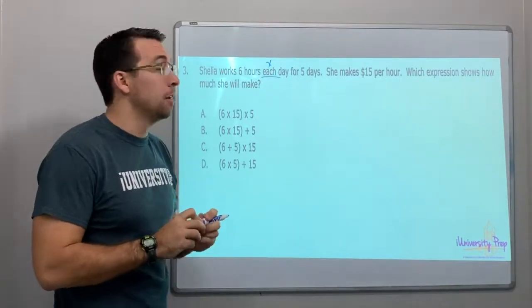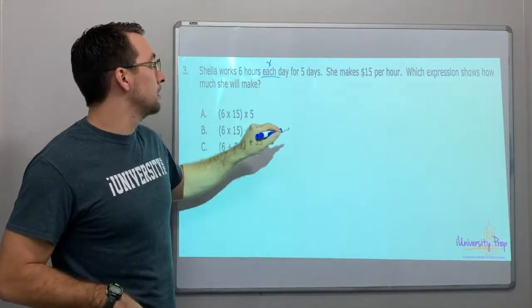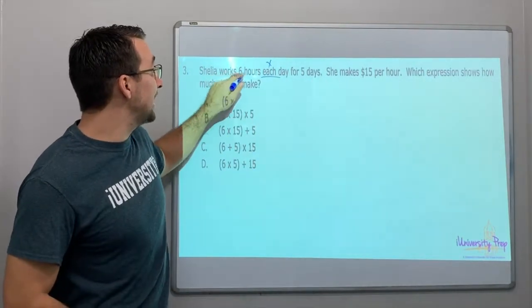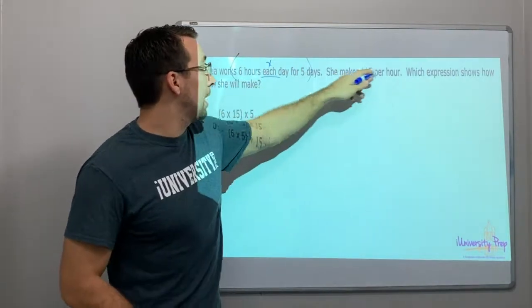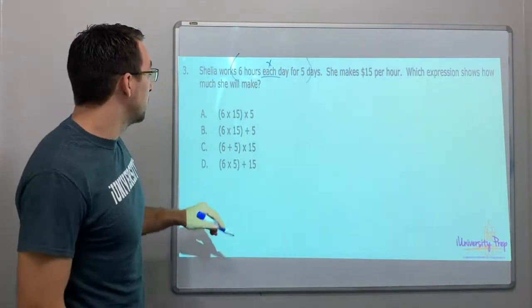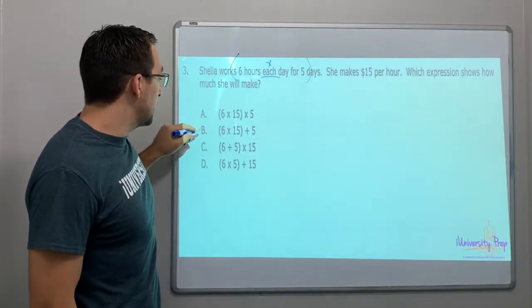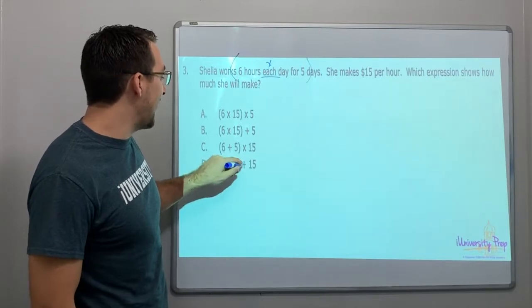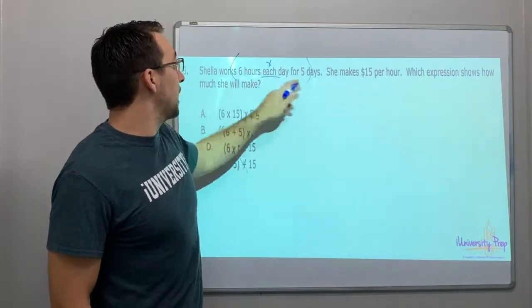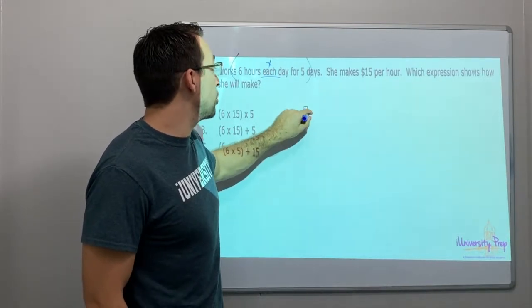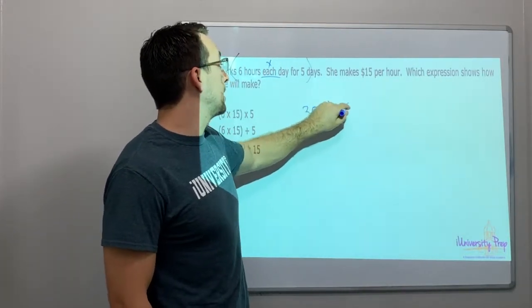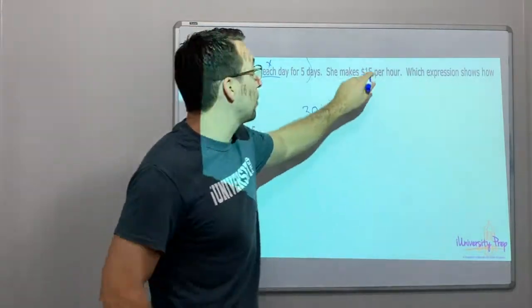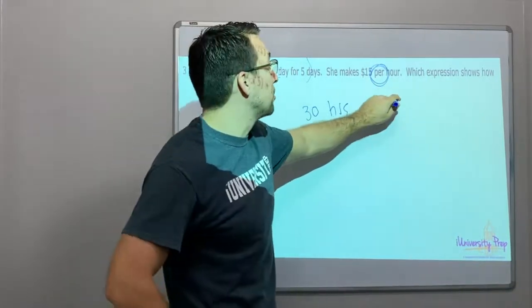Okay — Sheila works six hours each day. Anytime you see 'each,' it's going to be multiply or divide. Six hours each day for five days. She makes fifteen dollars per hour. Which expression shows how much she will make? Six times five times fifteen dollars per hour. We're not adding — if she works six hours for five days, that's 30 hours. Six times five is 30.